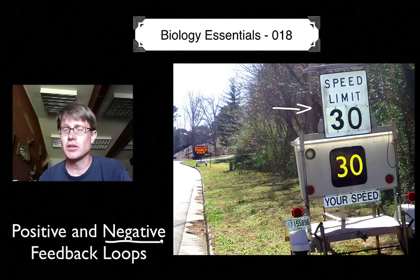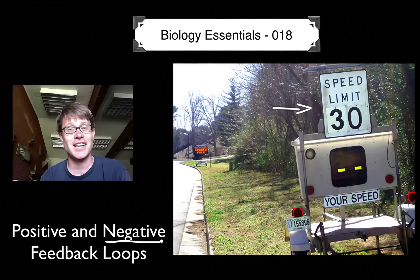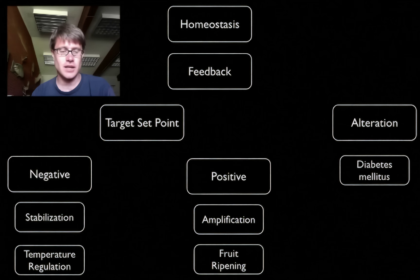A positive feedback loop you would experience if you were to see this sign as a challenge. So you see you're going 30 miles an hour and realize I could go 39 or maybe 51. I could eventually get a ticket or break the sign. That's a positive feedback loop. It's when you're amplifying and moving away from that target set point.